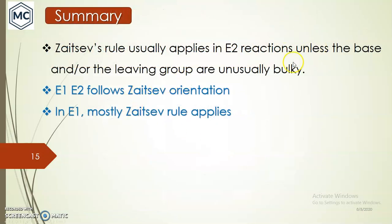In summary: Zaitsev's rule applies in E2 reactions unless the base or leaving group is unusually bulky or the leaving group is positively charged. Zaitsev's rule also applies in E1 reactions. Zaitsev's rule means dehydrohalogenation of an alkane gives the highly substituted product, while Hofmann's rule predicts the less substituted product. That's all about Hofmann and Zaitsev elimination — thank you for watching.